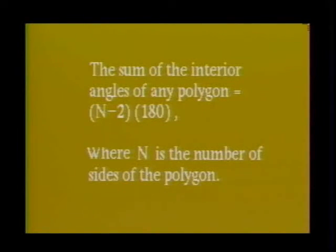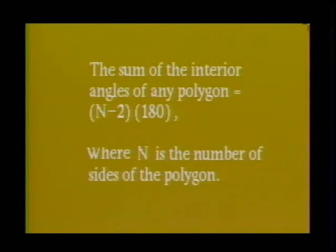Therefore, if we have a polygon with n sides, n minus two triangles will be formed.